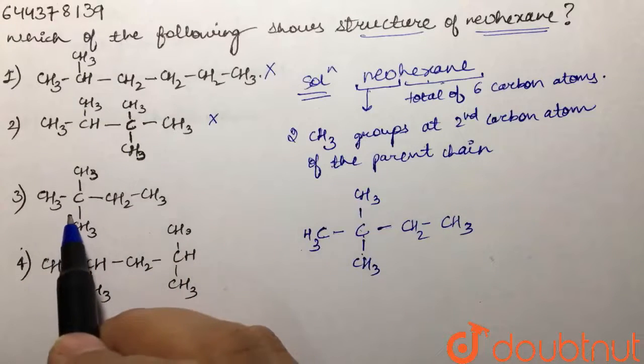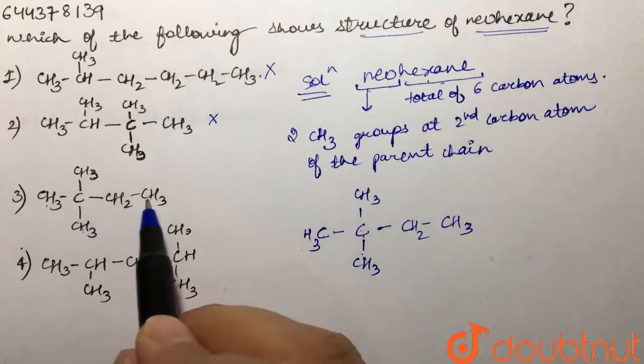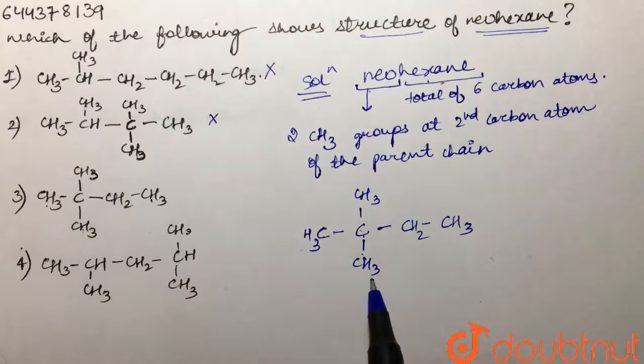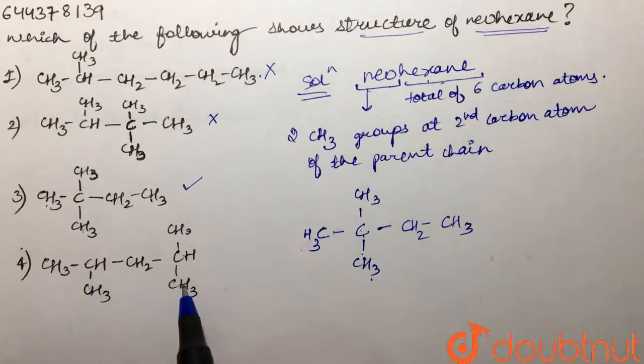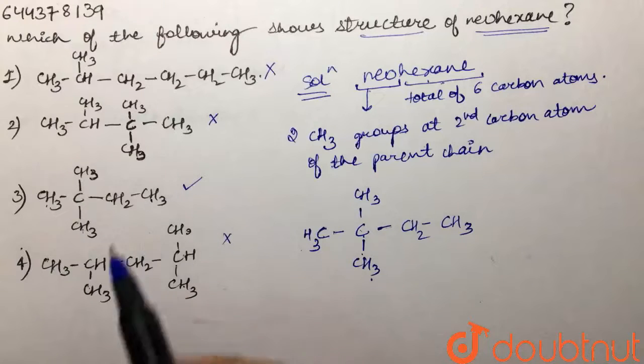In the next case, this is one, two, three, four, five, and six carbon atoms, and the structure just matches with our solution, so this is correct. The next one has one, two, three, four, five, six, seven carbon atoms again. This is also not correct. So the only correct option is the third one.